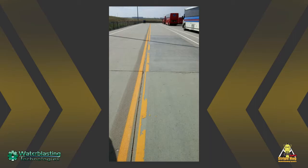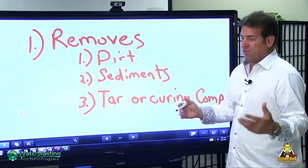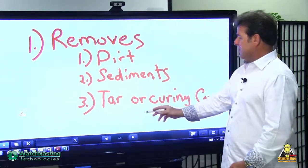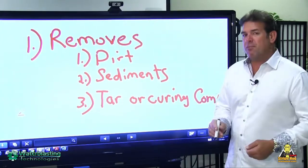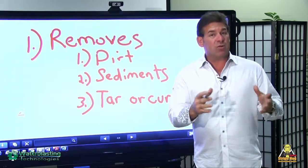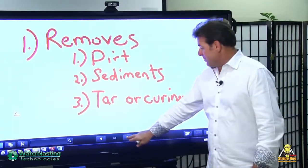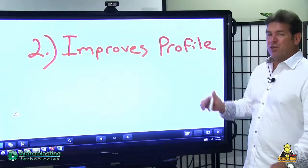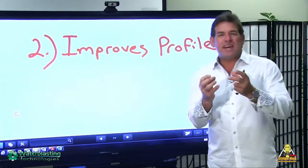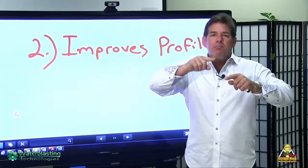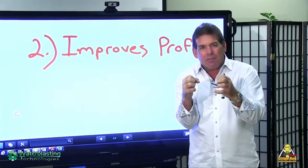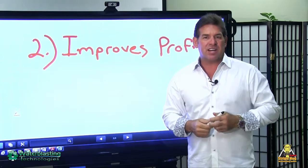So in preparing with water blasting, you remove the dirt, the sediments, the tar or curing compound that the paint or thermal might otherwise adhere to, and also you improve the surface profile. You give that material more peaks and valleys to which it can grab onto and adhere over time.